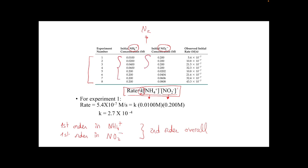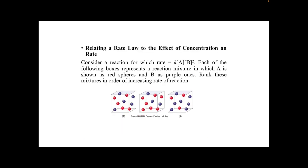We can calculate the k value using any pair of concentration values. Using experiment one: the rate equals 5.4 × 10⁻⁷ mol/s, the concentration of ammonium is 0.001 and nitrite is 0.2. The only unknown is k, the rate constant, which we can easily calculate as a fixed constant value for this reaction.